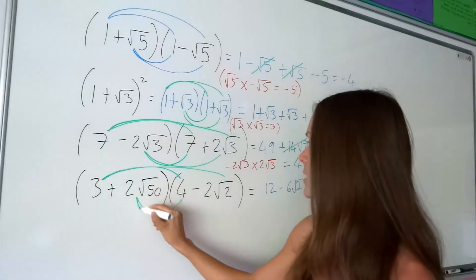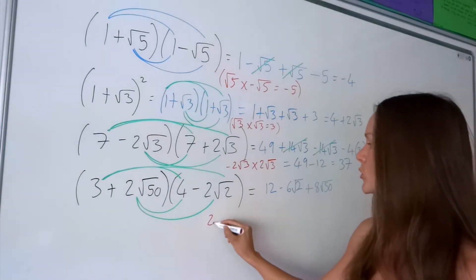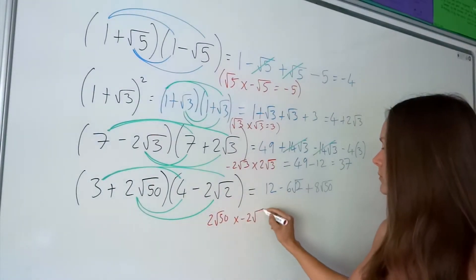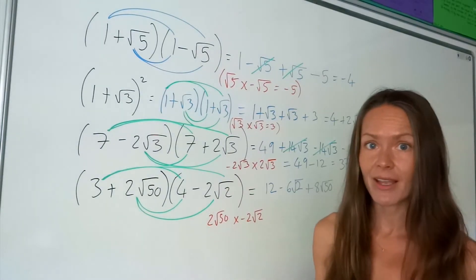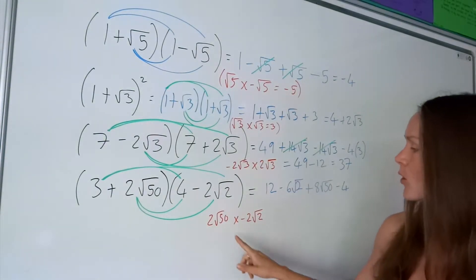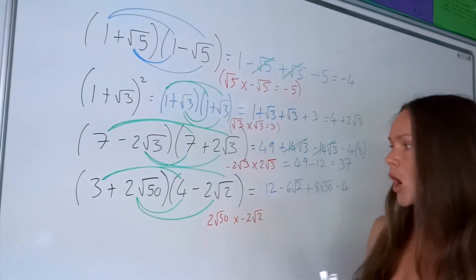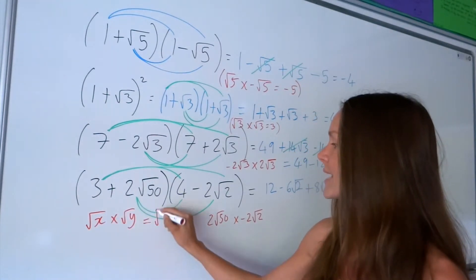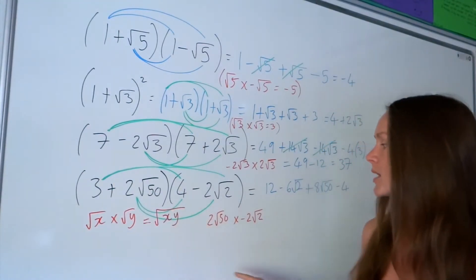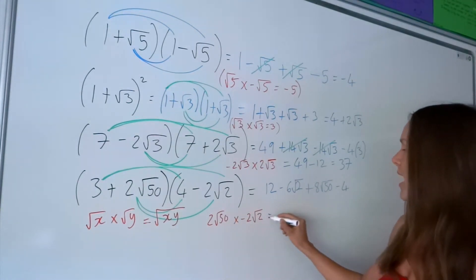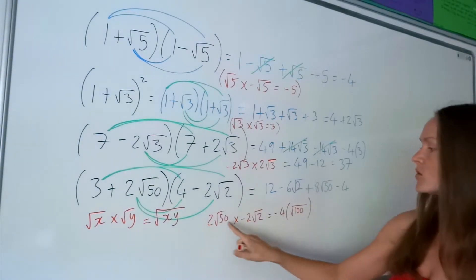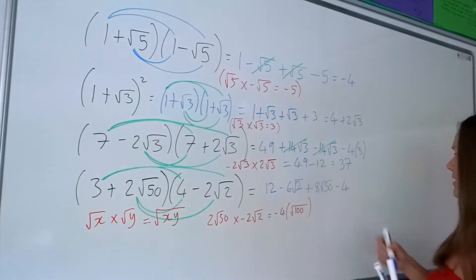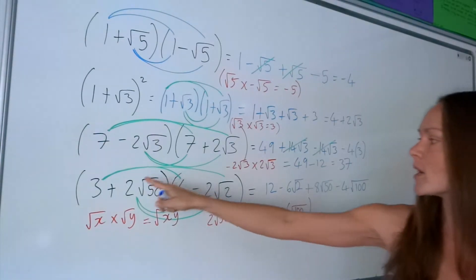And now for the last two terms: I've got 2 root 50 multiplied by negative 2 root 2. Well, 2 multiplied by negative 2 is negative 4. Then I've got root 50 times root 2. When you multiply a number being square rooted by another number being square rooted, it's the same as multiplying those two numbers together and square rooting. So I can rewrite root 50 times root 2 as root 100, because 50 times 2 is 100. So I'm rewriting this as negative 4 root 100.